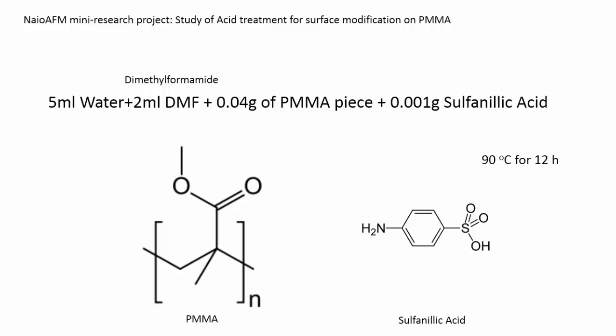The acid treatment on PMMA is done by 5 ml water plus 2 ml DMS, plus 0.04 g of PMMA and 0.001 g of sulfonylic acid. The reaction has been run for 12 hours under 90 degrees C.